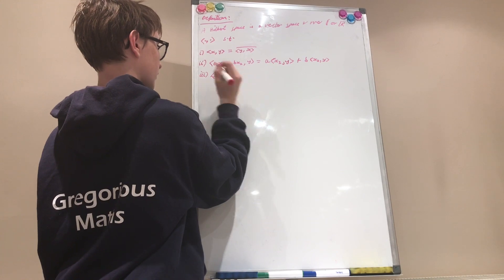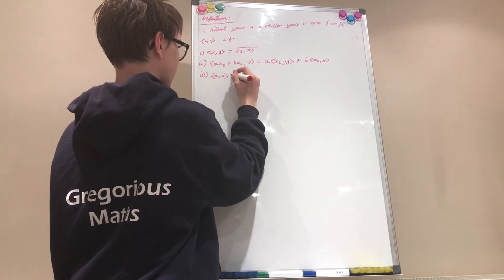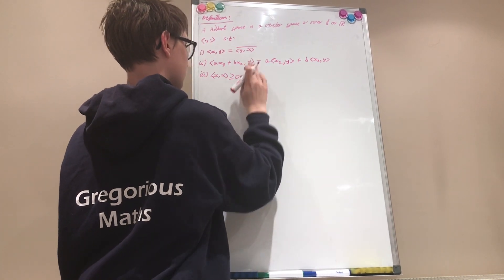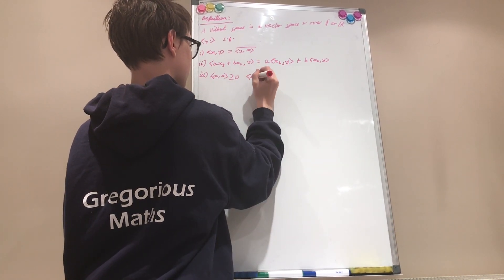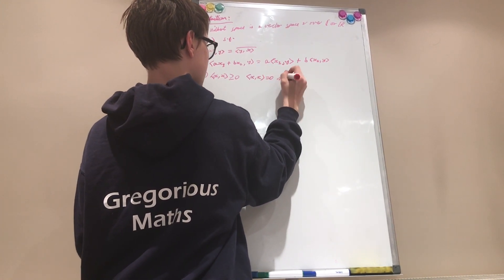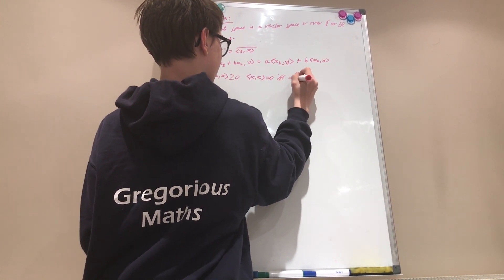And number three is exactly the same as our Euclidean space R3 example. It says that x inner product x is greater than or equal to zero, where x inner product with itself is equal to zero if and only if x equals zero.